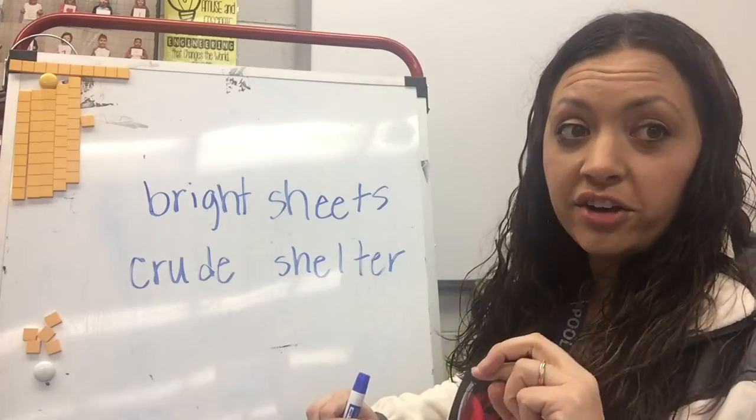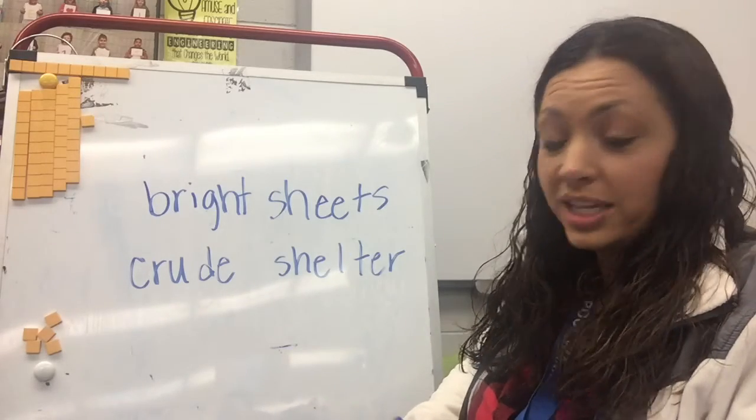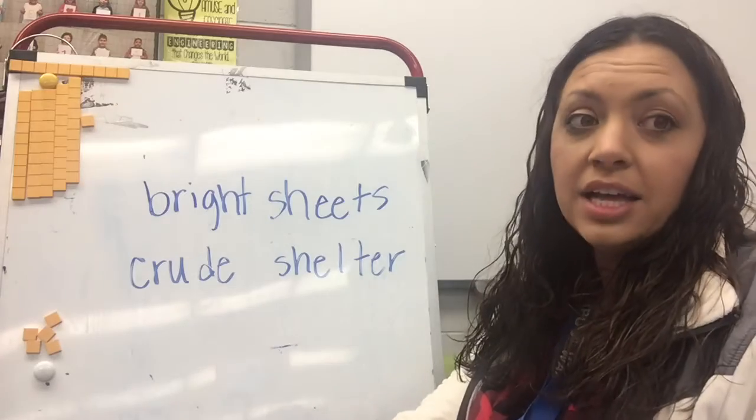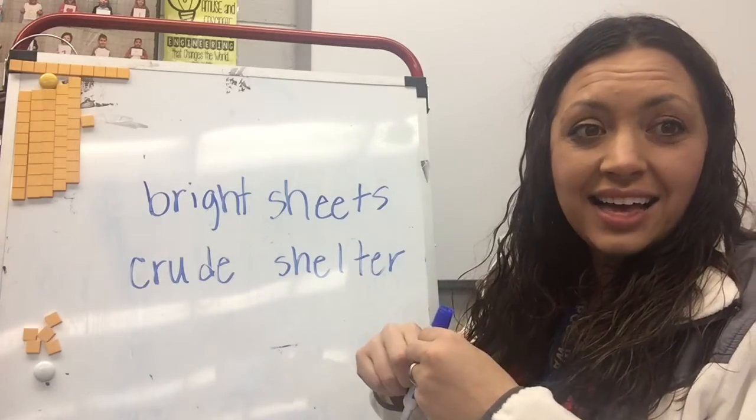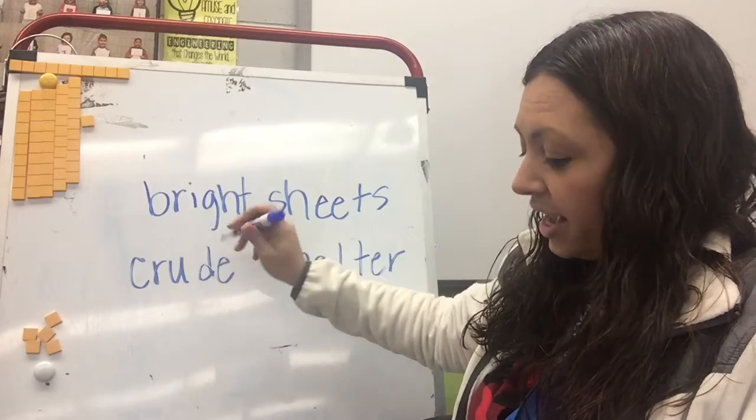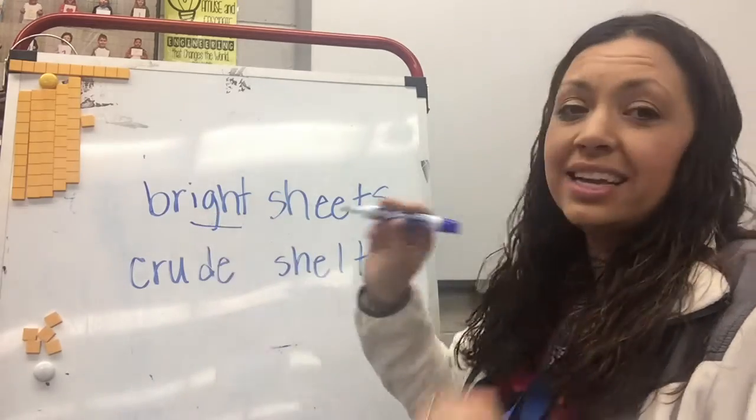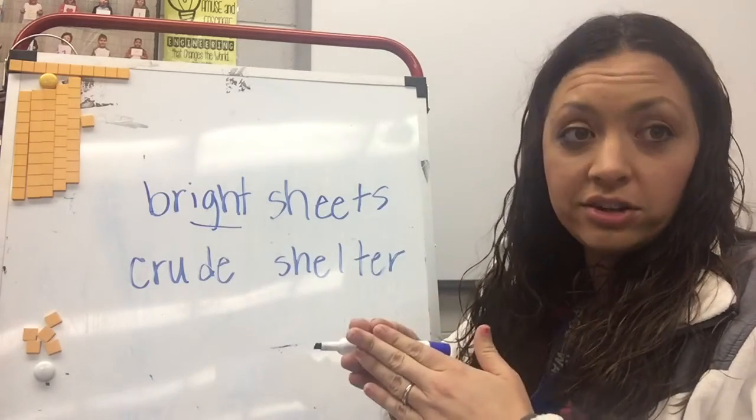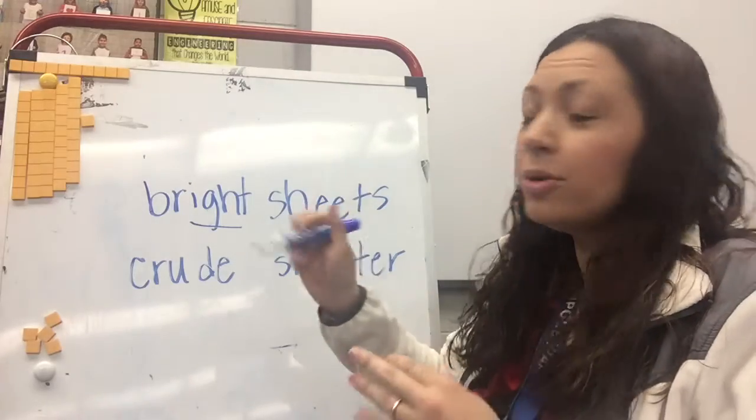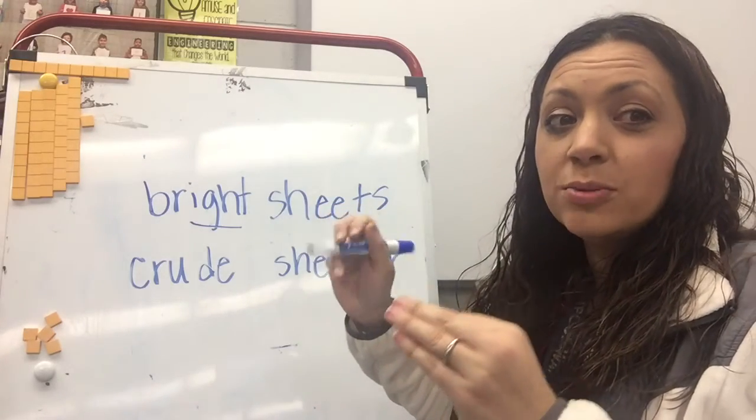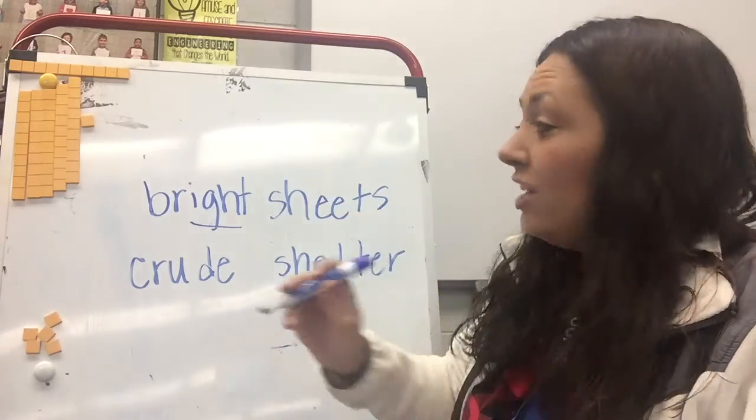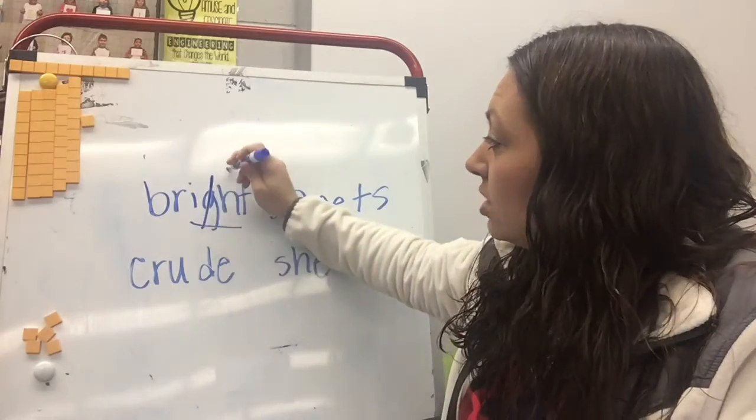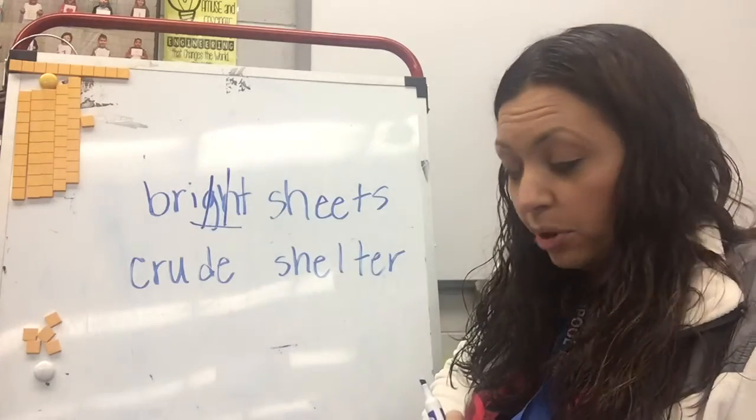Remember, a trigraph is three letters that make one sound. We've talked a lot about digraphs, but a trigraph is three letters that make one sound. So the I sound, that I-G-H, I'm going to underline it because I know that's going to all go together to make one sound. And remember, this trigraph is really tricky because when we say it, it just says I. You can't hear that G or the H, so I have to cross them both out.